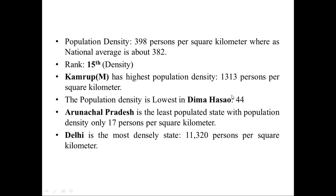Population density is lowest in Dima Hasao with only 44 persons per square kilometer. At the national level, Arunachal Pradesh has the lowest population density at 17 persons per square kilometer, whereas Delhi has the highest at around 11,320 persons per square kilometer. These statistics are essential as questions may be asked about them.